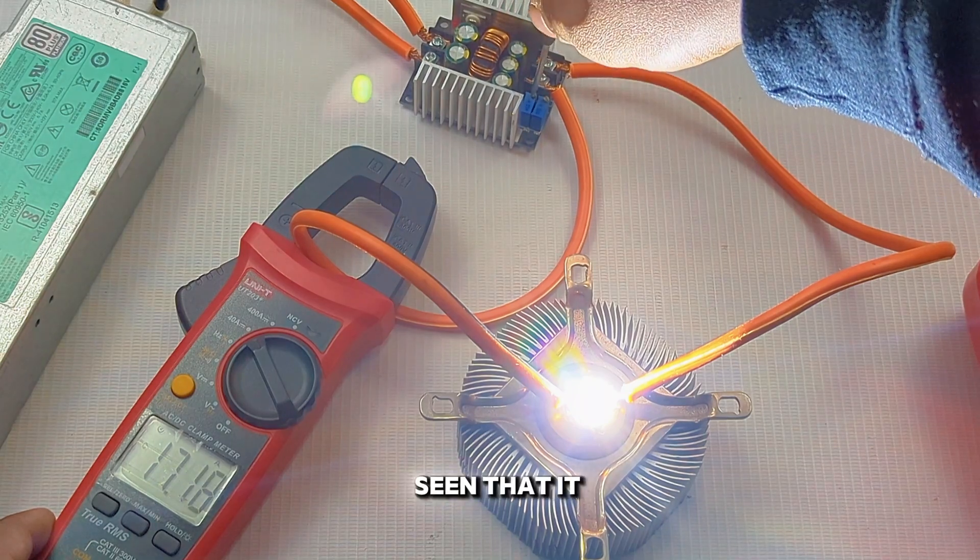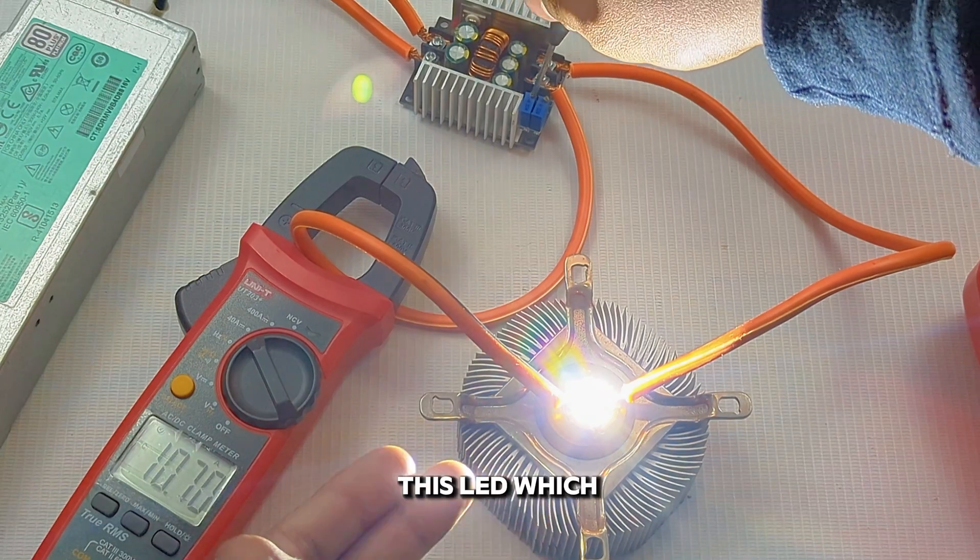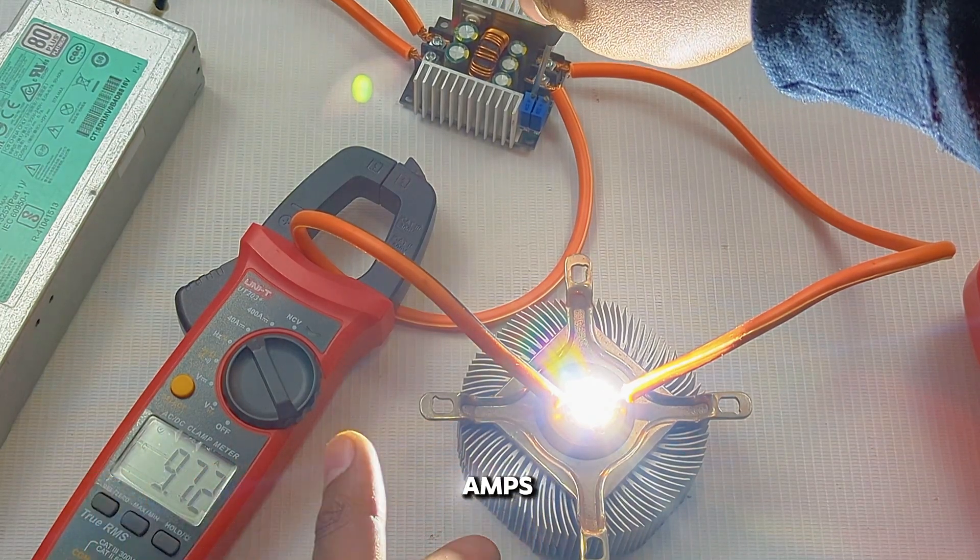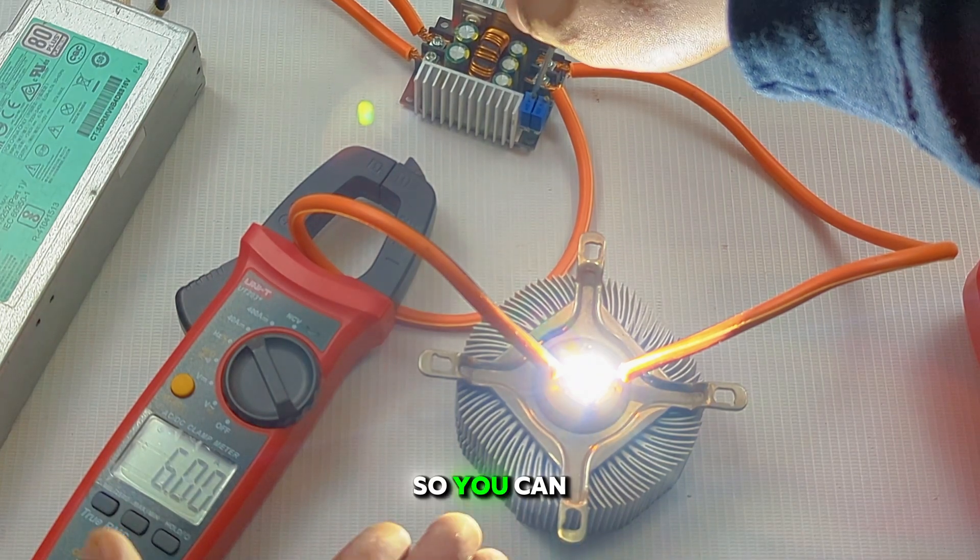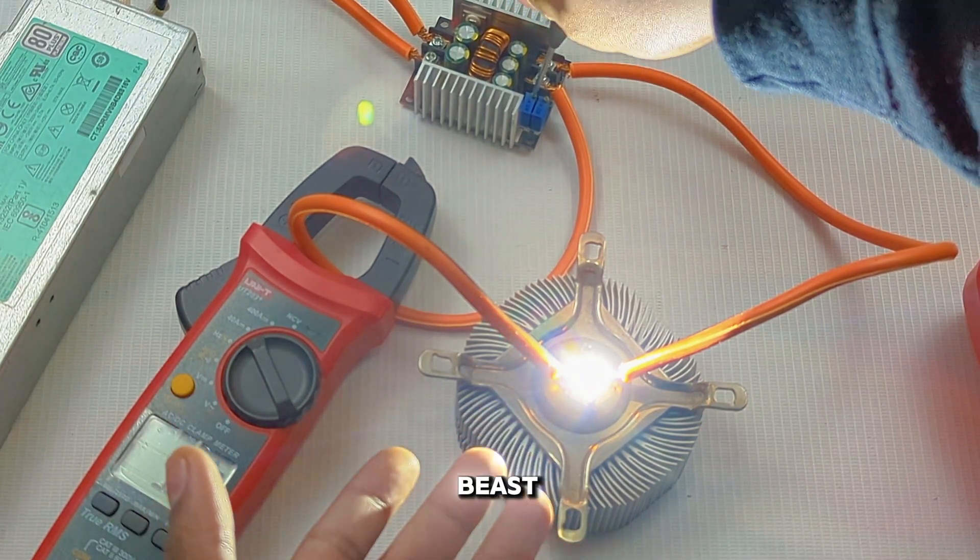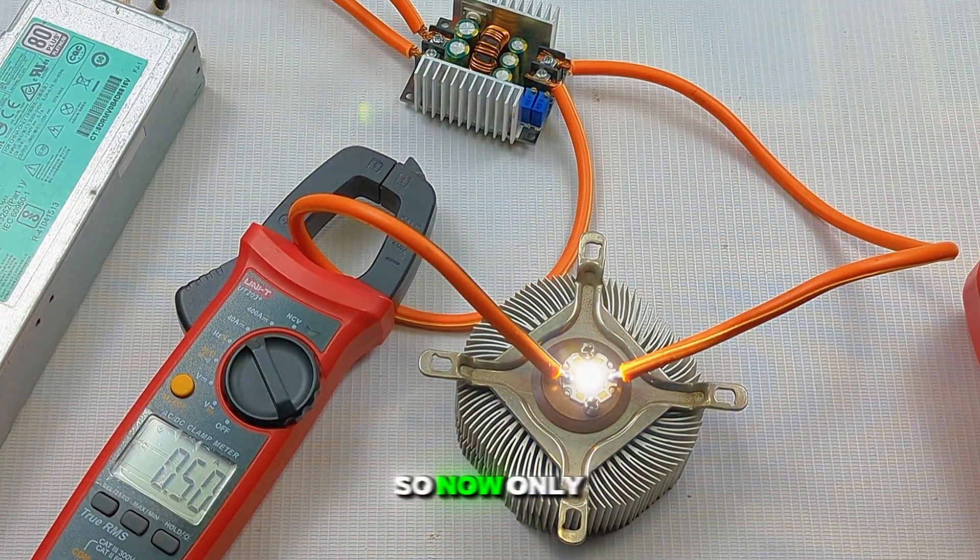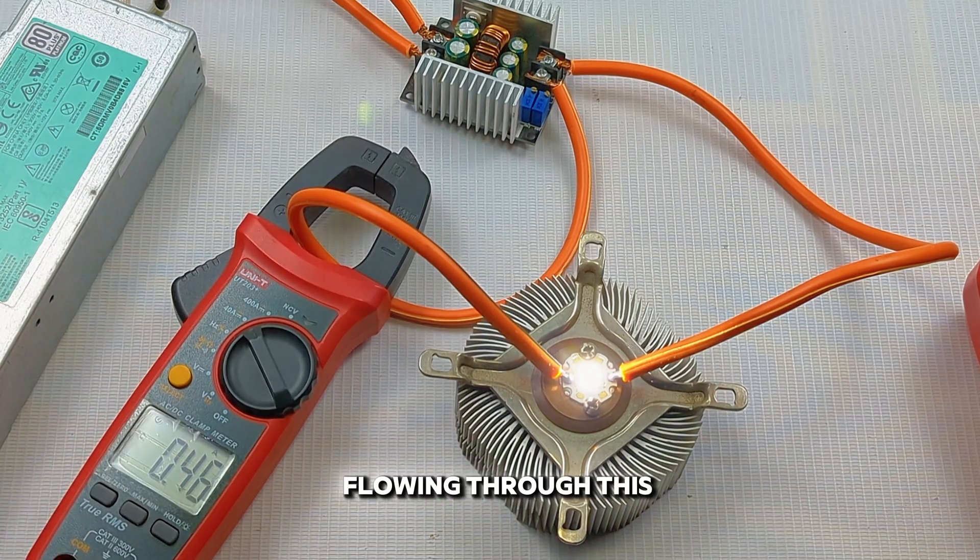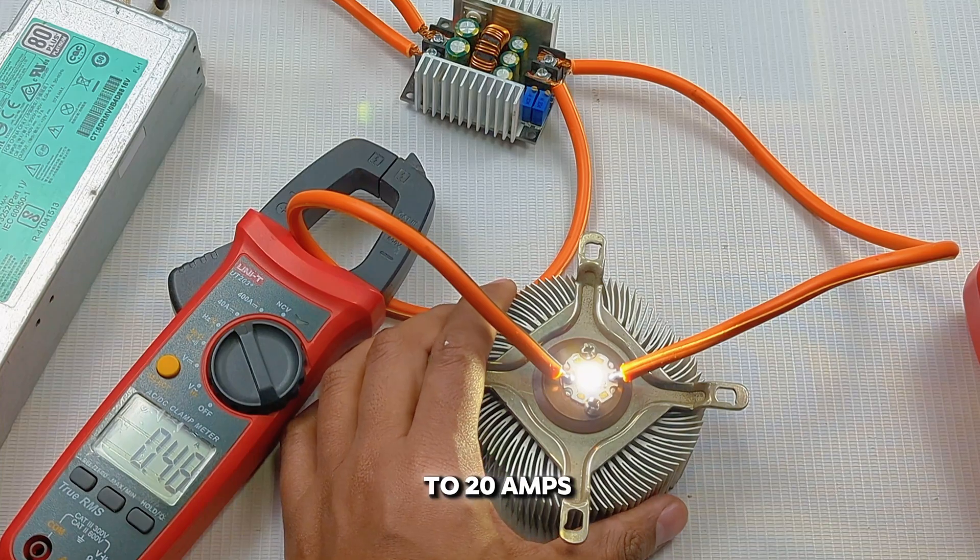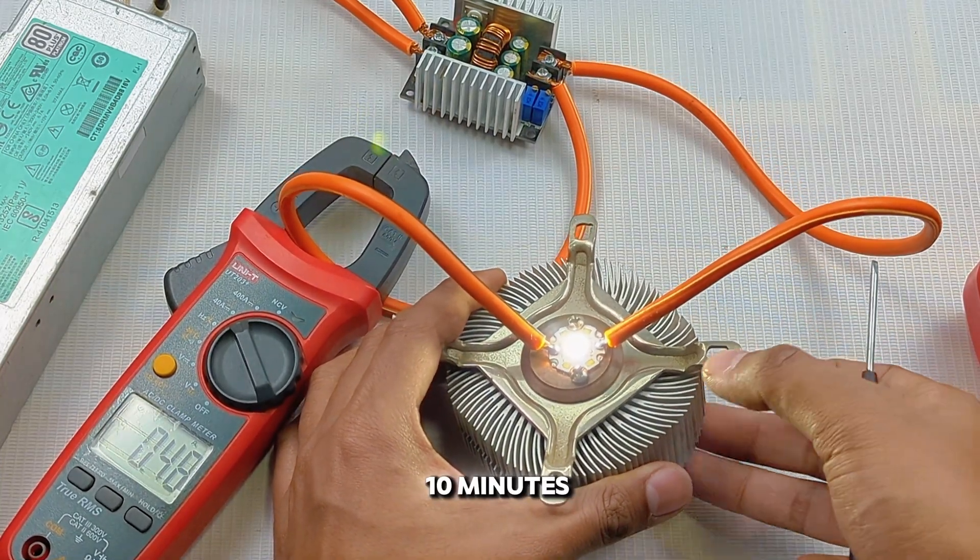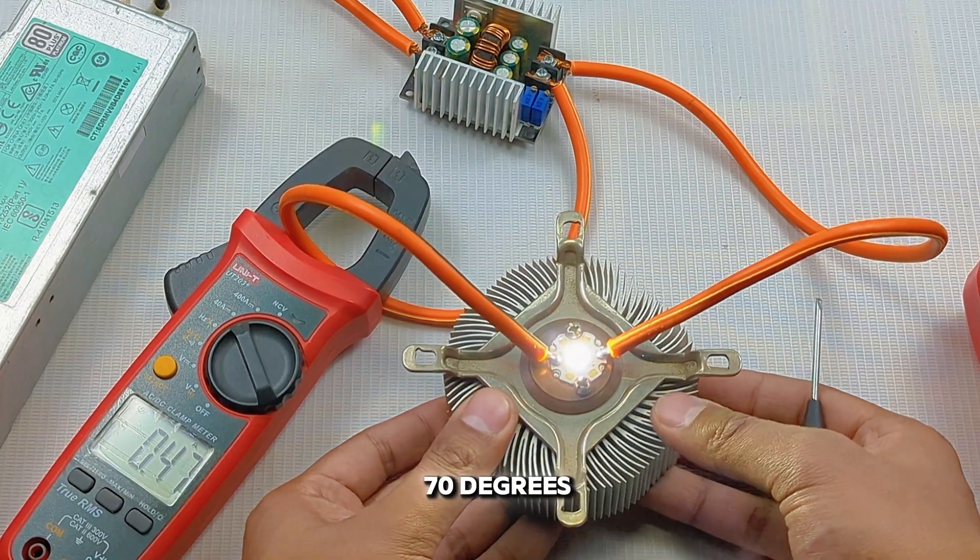As you can see, it can easily go to 20 amps. Hats off to this LED which is handling 20 amps while it's only rated for 8 amps max - a tiny beast. Now only half an ampere is flowing through this LED. At 15 to 20 amps, you have to add a fan after 5 to 10 minutes because this heat sink would get super hot, near 60 to 70 degrees Celsius.